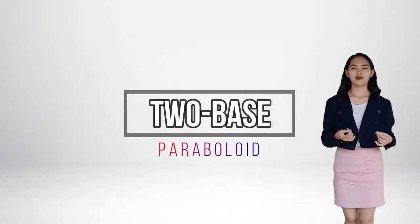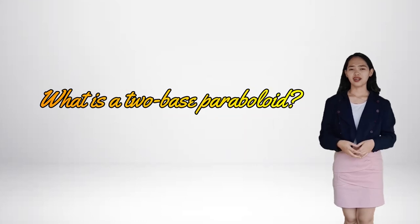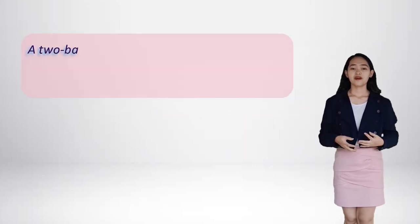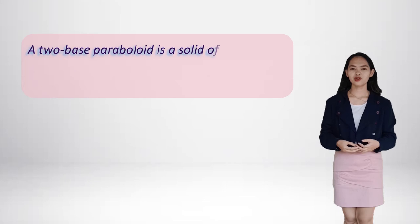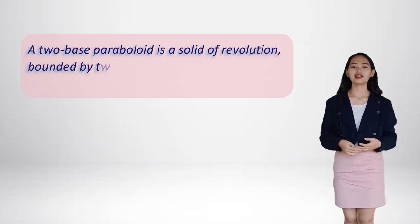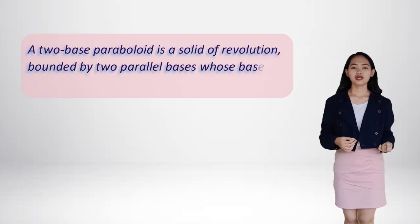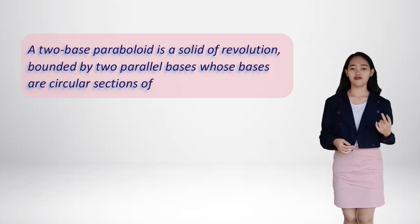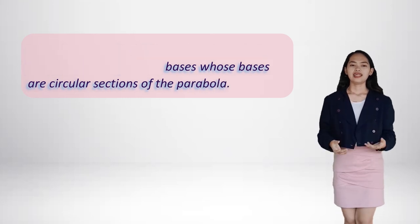On the other hand, let's talk about a two-base paraboloid. So what is a two-base paraboloid? A two-base paraboloid is a solid of revolution bounded by two parallel bases, whose bases are circular sections of the parabola.